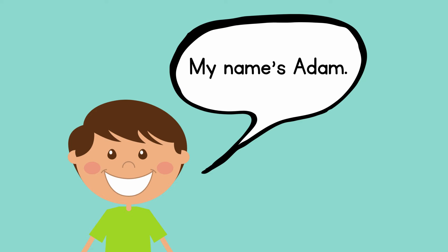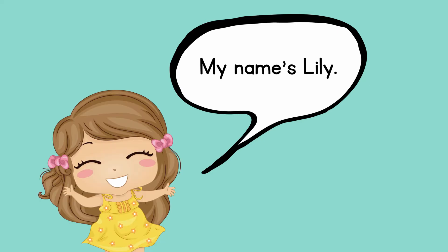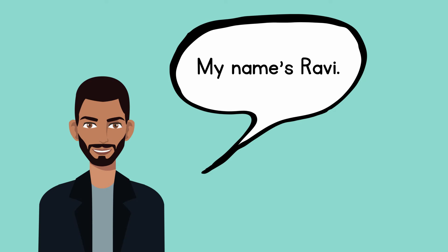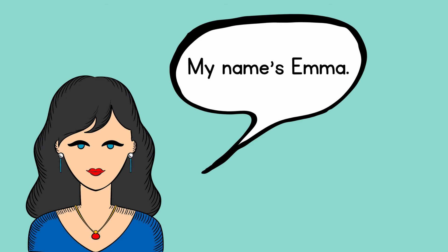Let's read together. My name's Adam. My name's Lily. My name's Ravi. My name's Emma. Sometimes I hear you say 'my name' without the sound S. Remember, you need to make the sound clear: 'My name's.' It comes from the phrase 'my name is.' My name's.